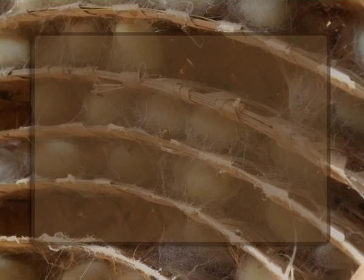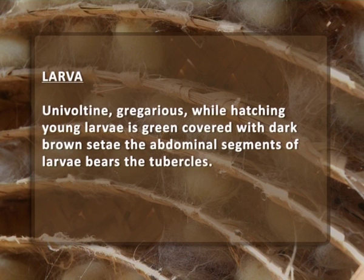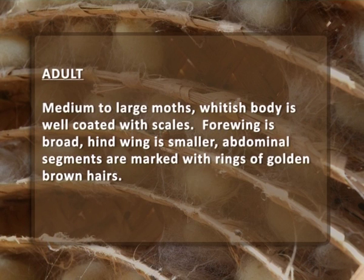Life cycle of Anape veneta: eggs are soft white at margin, turn grey at centre, and after some time form a disc shape. Larvae are univoltine and gregarious. While hatching, young larvae are greenish, covered with dark brown setae, and the abdominal segments bear tubercles. Pupa is obtect, dark brownish, and undergoes diapause for 200 to 207 days. Adults are medium to large moths; the whitish body is coated with scales, forewing is broad, hind wing is smaller, and abdominal segments are marked with rings of golden brown hairs.